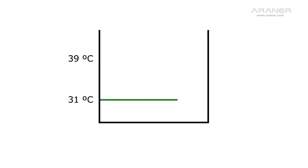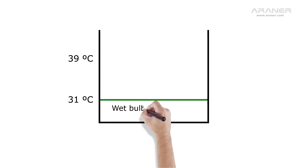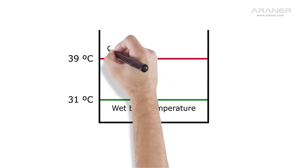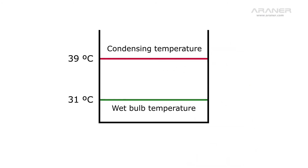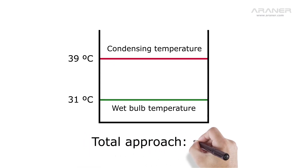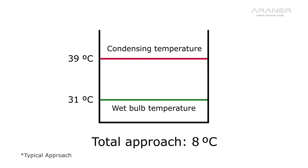Starting also from 31 degrees of wet bulb temperature, we will be condensing lower at 39 instead of 41, because we eliminated the water temperature difference of the cooling water loop, resulting in a total approach of 8 instead of 10.